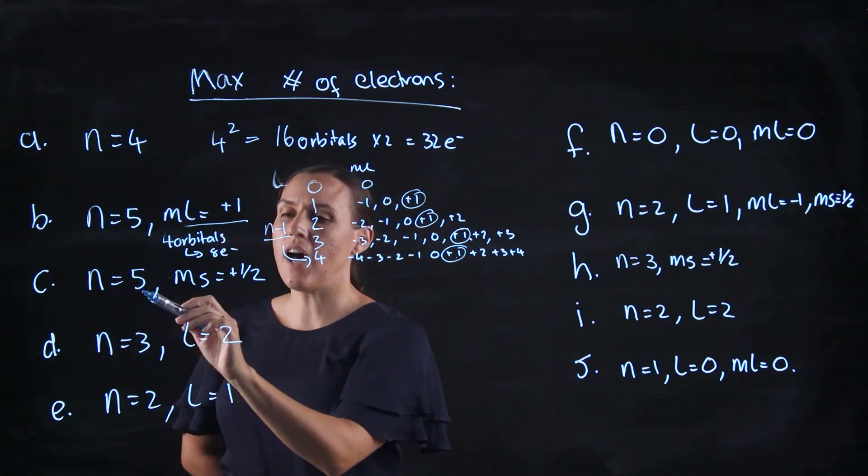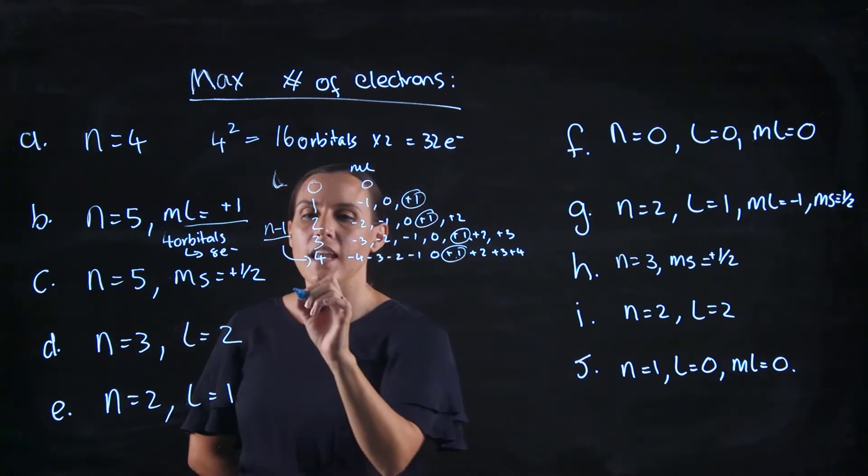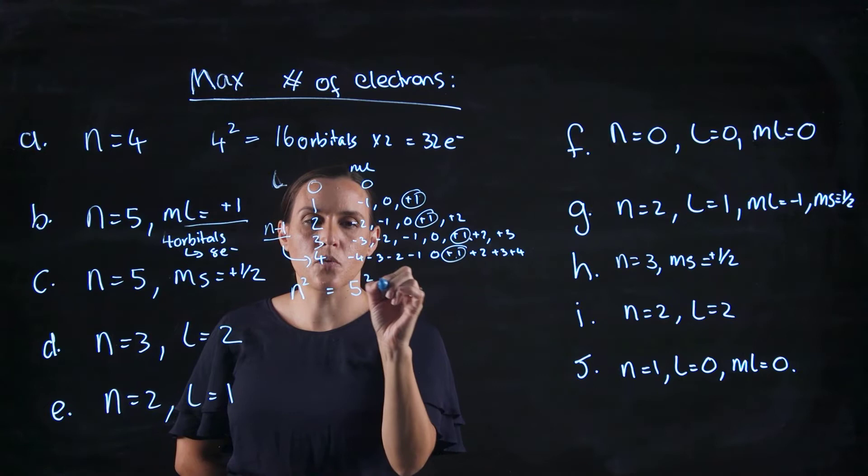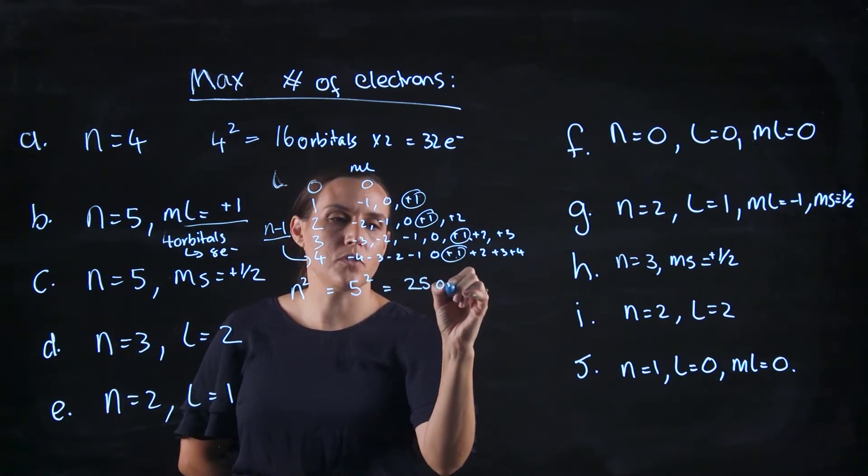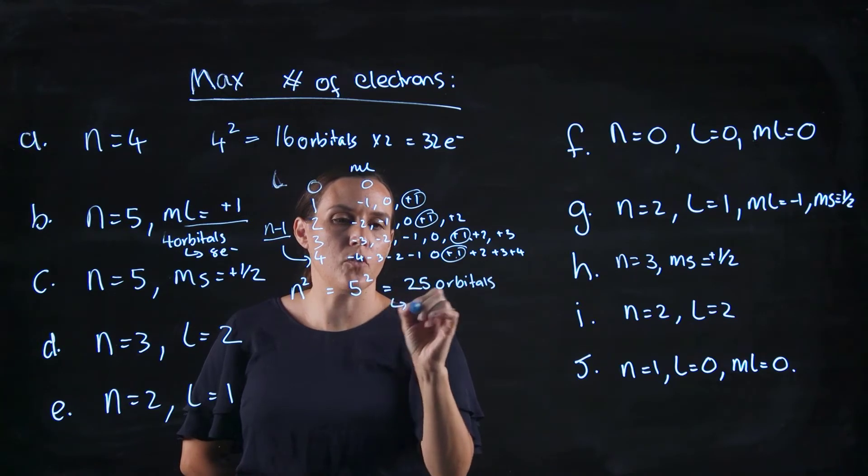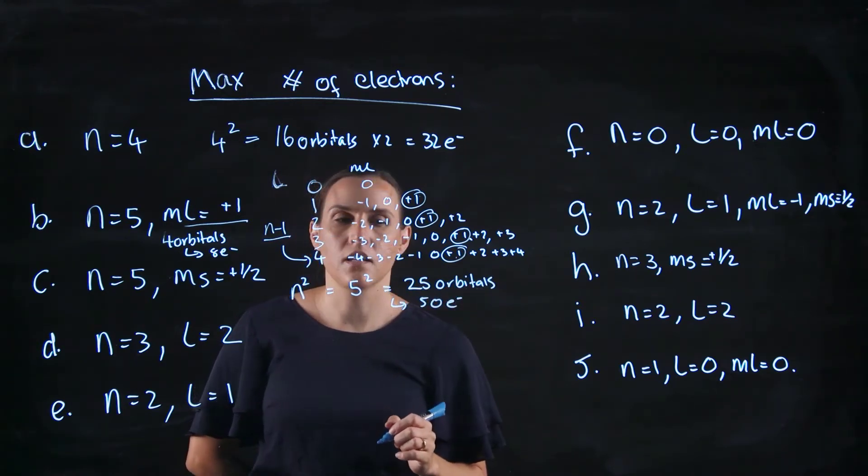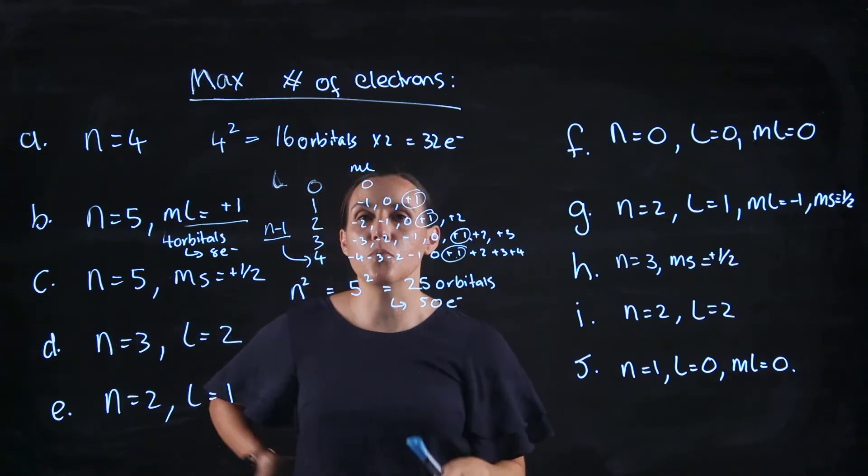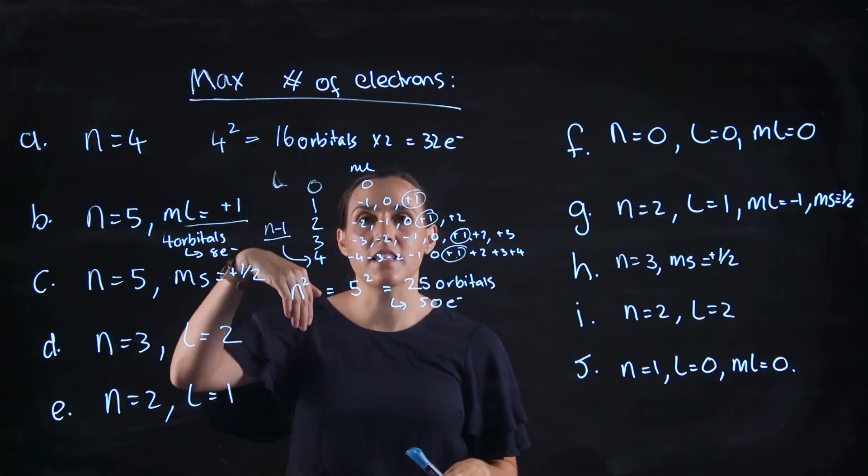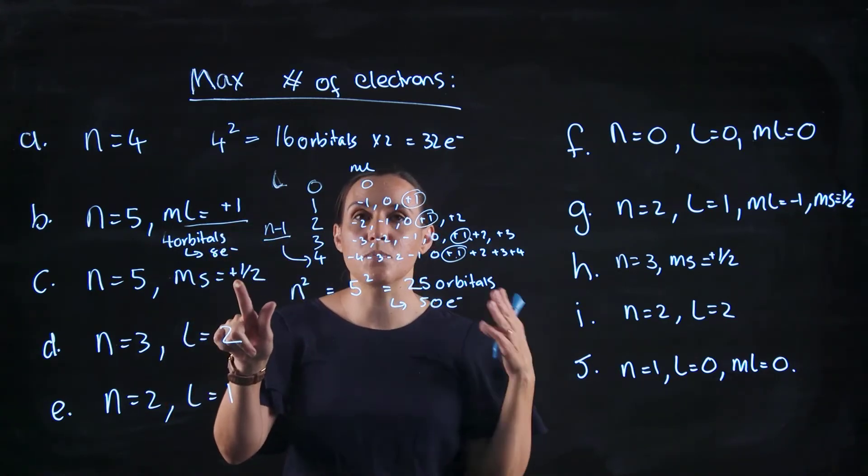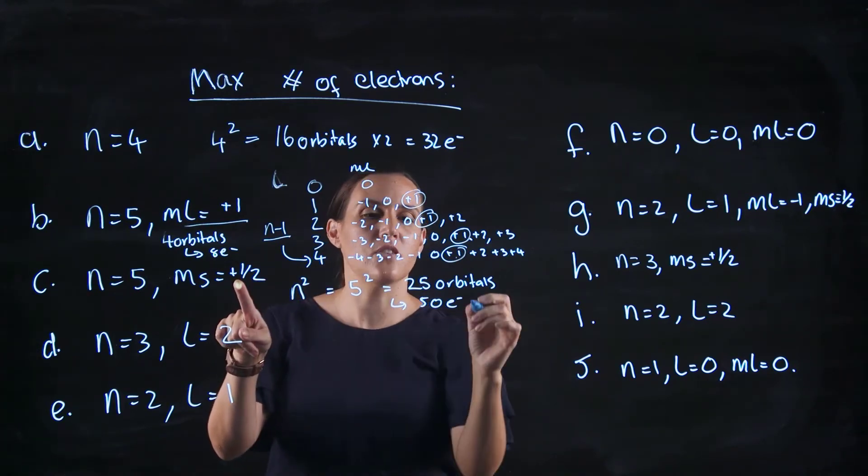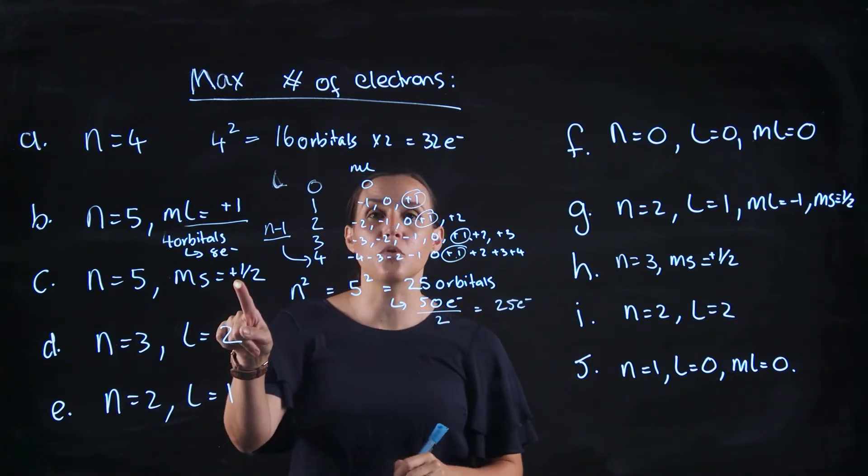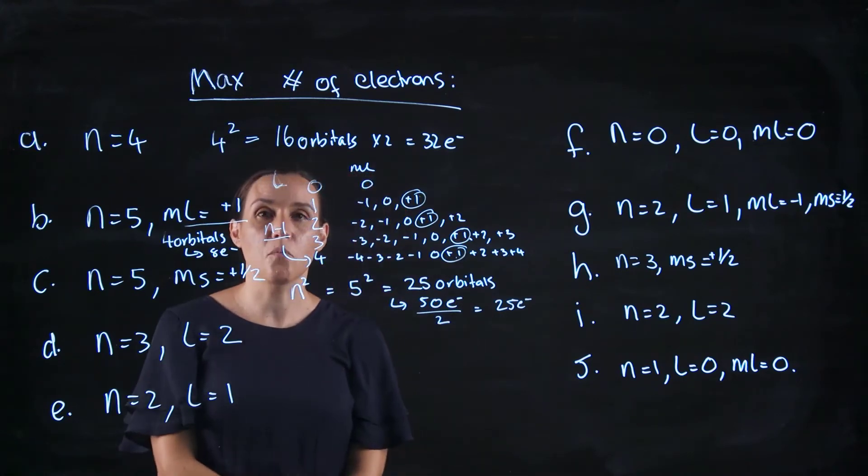Now the next one is n equals 5 and ms is plus 1 half. So n equals 5 would give us n squared value of 5 squared, which would be 25 orbitals, and therefore 50 electrons. Now we have an ms of plus 1 half. So remember in every orbital you have an electron that's plus 1 half and one that's minus 1 half. We're specifically only focusing on that plus 1 half, so it's going to be half that number. So it would be 25 electrons. So for each orbital there's only one electron that's going to have that plus 1 half.